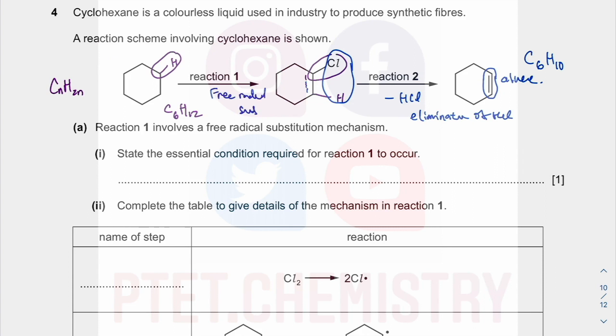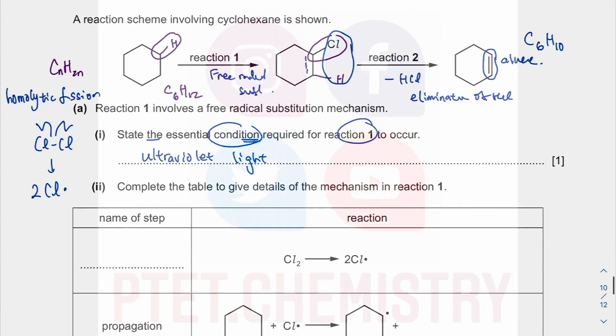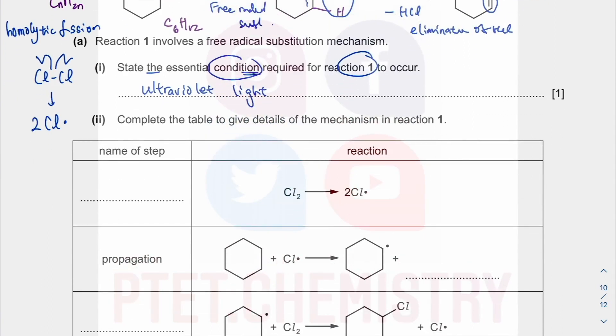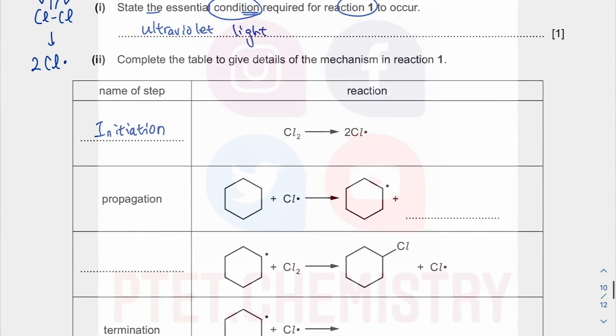For reaction 1, the essential condition you need is ultraviolet light. They want the condition, not the reagent. You need ultraviolet light to break the Cl2 into chlorine radicals. This is called homolytic fission. It's part of your introductory organic chemistry - they love to ask you to do definitions and when they do you cannot blend them. It's all stated in the specification.